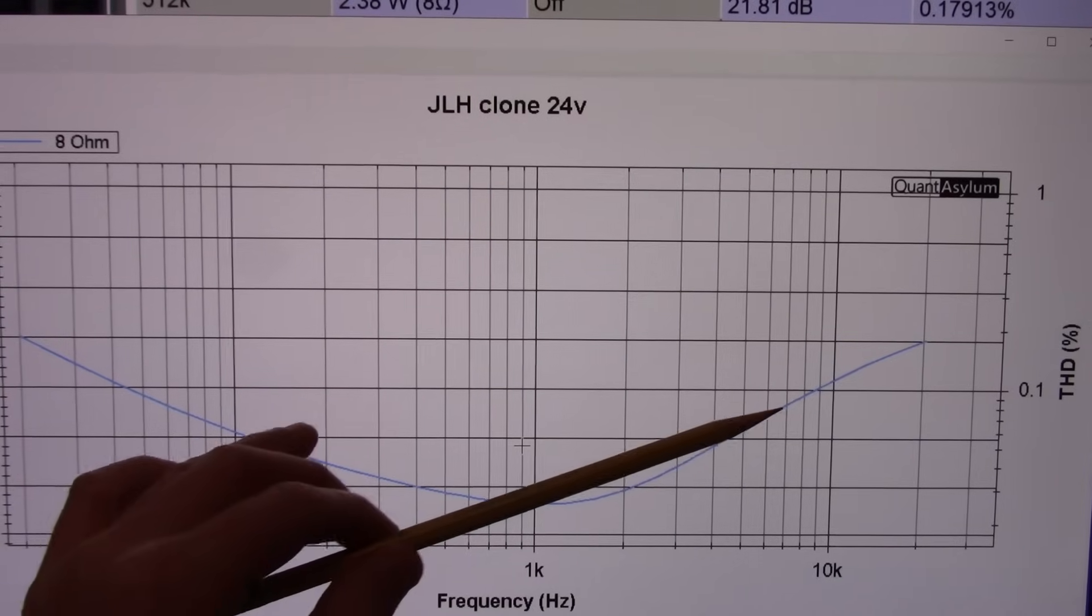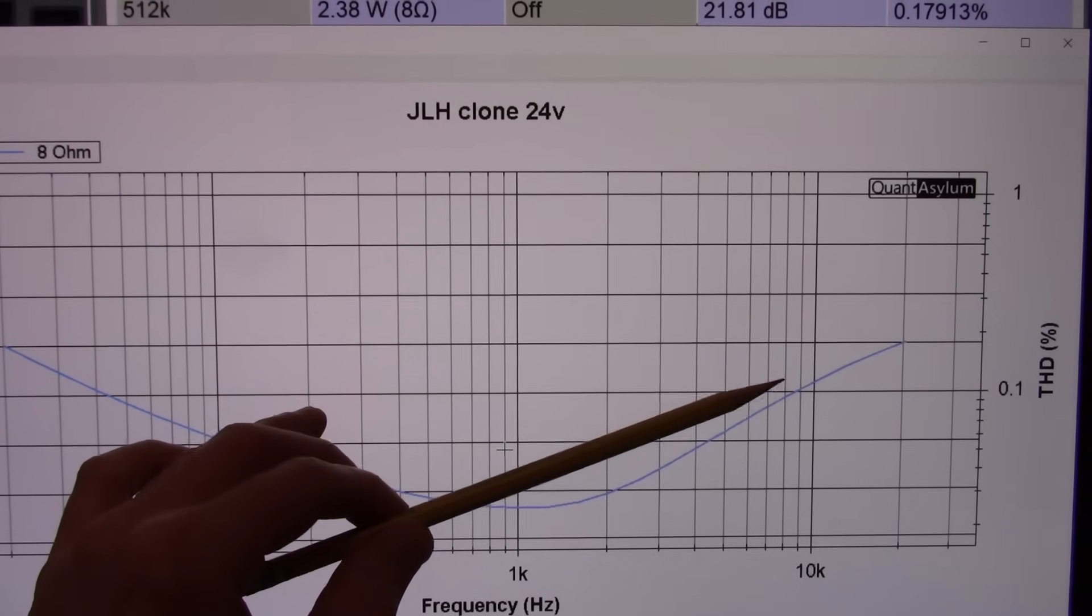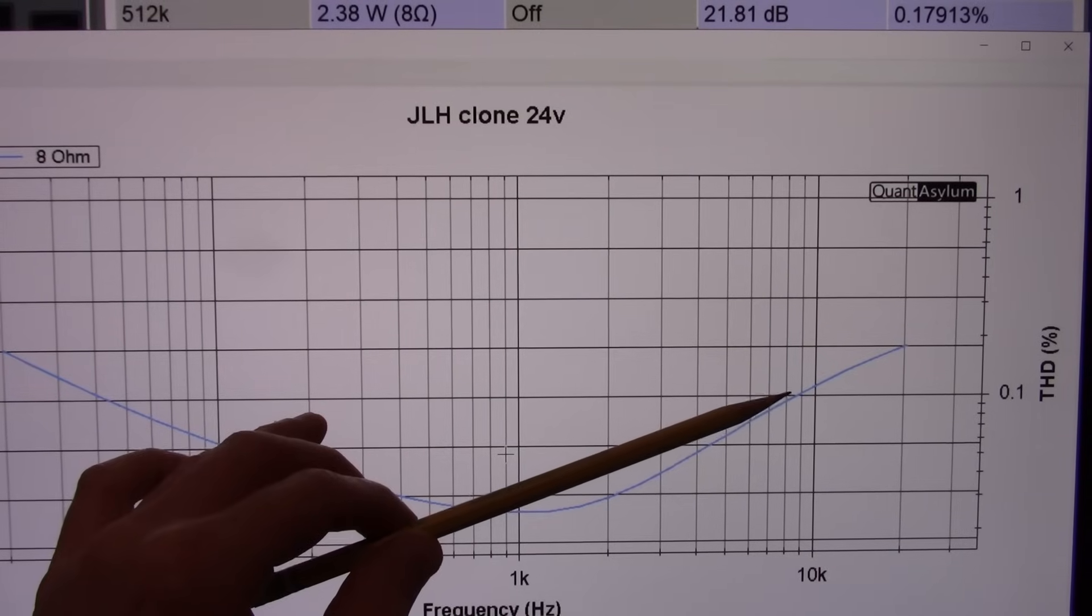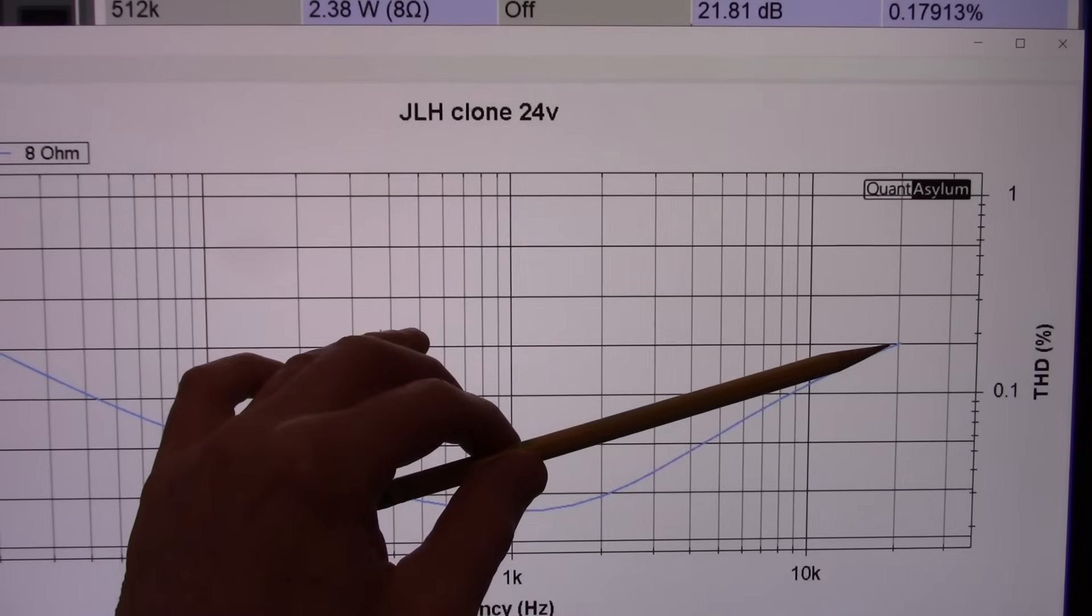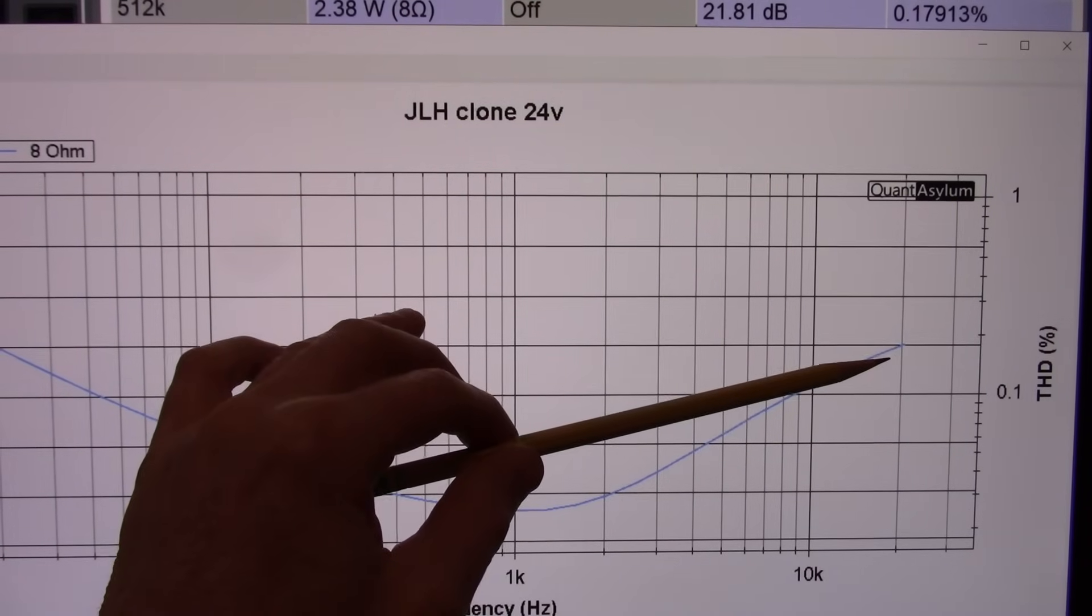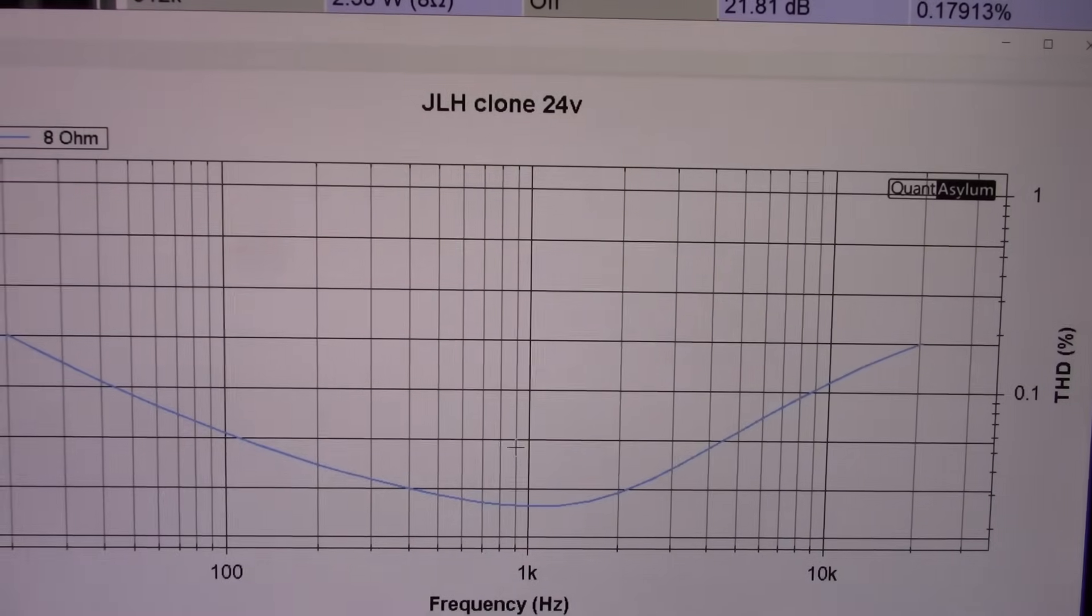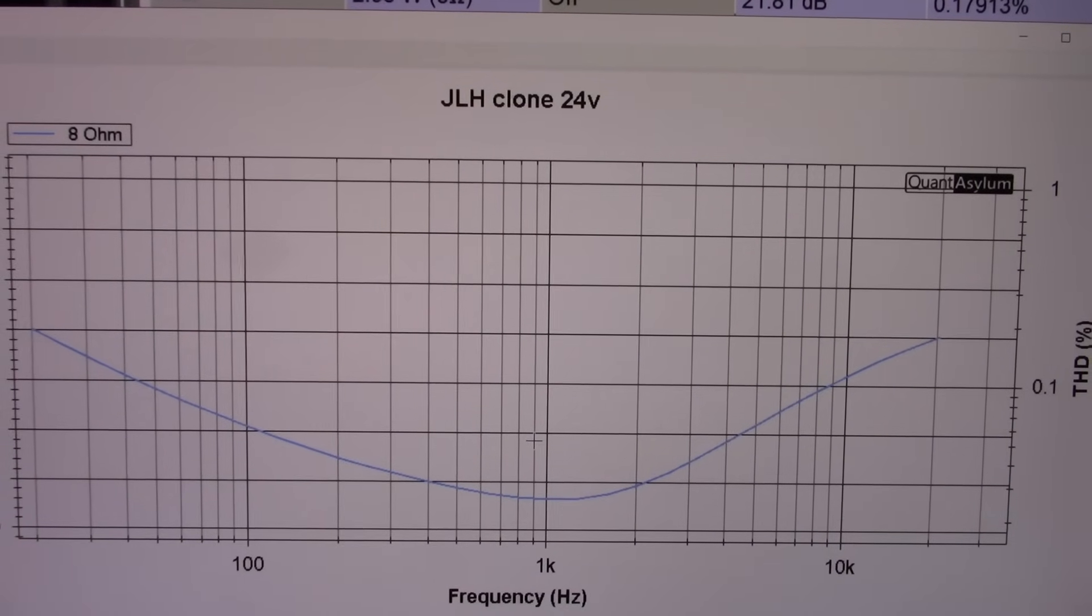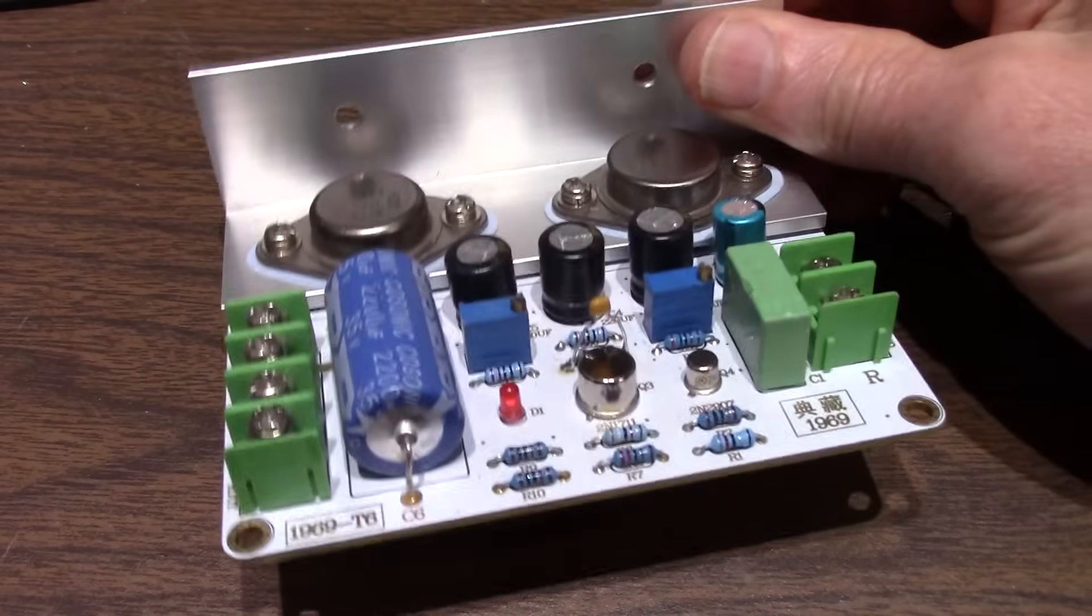And as the frequency increases towards the high end of the scale we're going above the 0.1 percent line around eight and a half kilohertz and we end up at 20 kilohertz what would that be just under point two percent. So it's all in all not a bad showing really.